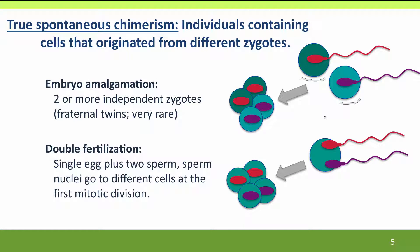A second way, a little more common, is double fertilization. In this case, there's only a single egg involved, but it's fertilized by two sperm, which then go on to contribute to the genomes of two different parts of the embryo. So all cells have the same maternal set, but different cells have different paternal sets — again, both from the same father.